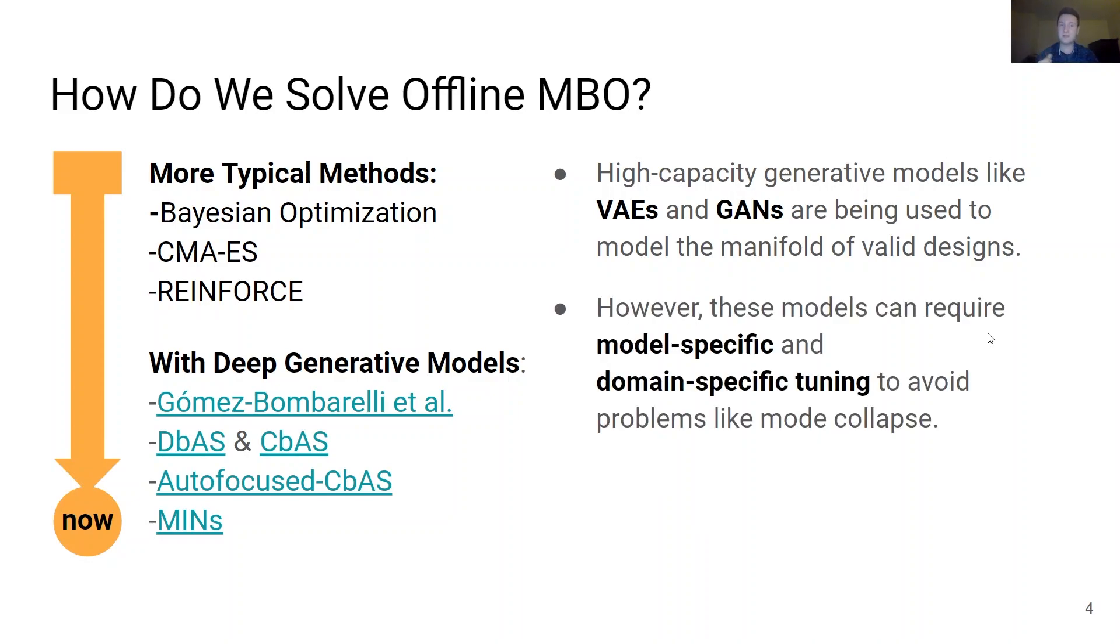However, while these methods can successfully avoid sampling adversarial examples by explicitly modeling the manifold of valid data, they often require model-specific and domain-specific tuning to avoid problems like mode collapse. Moreover, unlike pure generative modeling, optimization would naturally require modeling the tail ends of the data distribution, which can be especially challenging to estimate, even to a reasonable degree of accuracy.